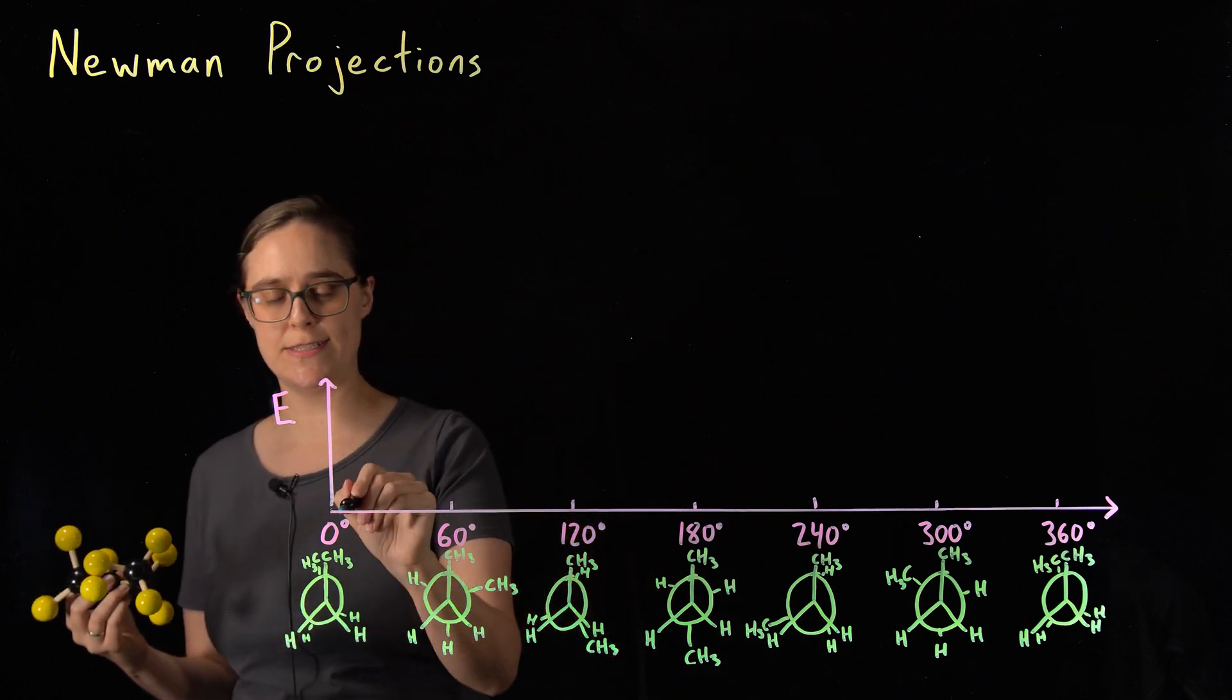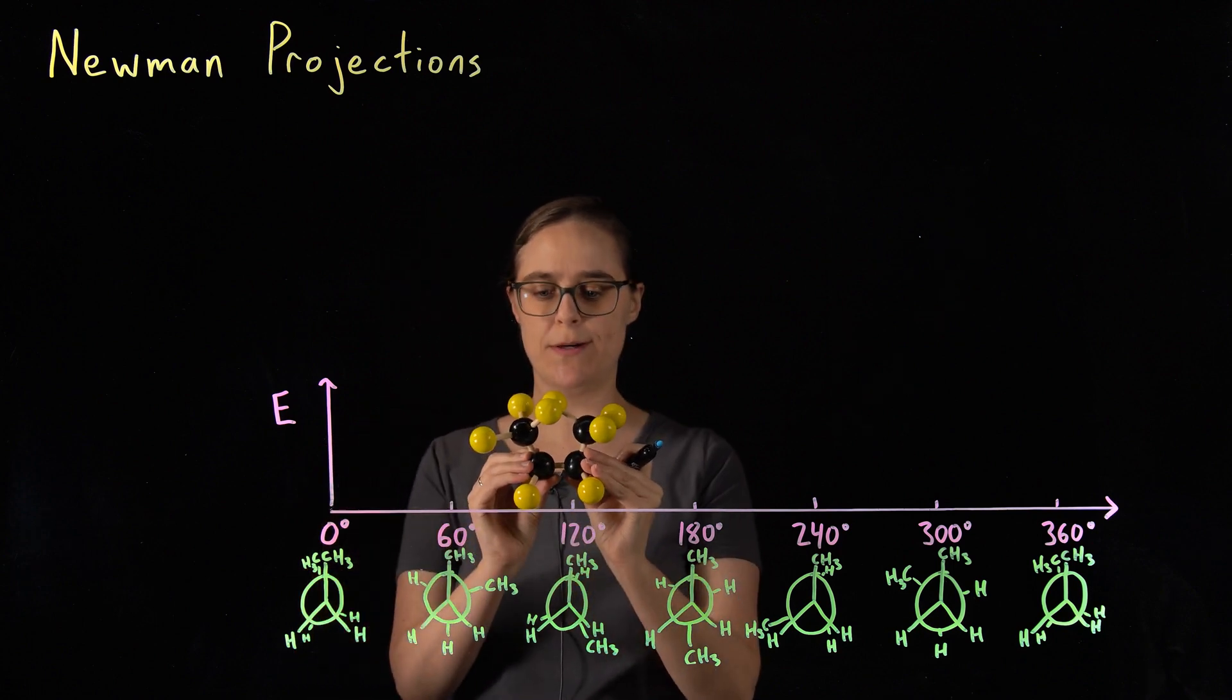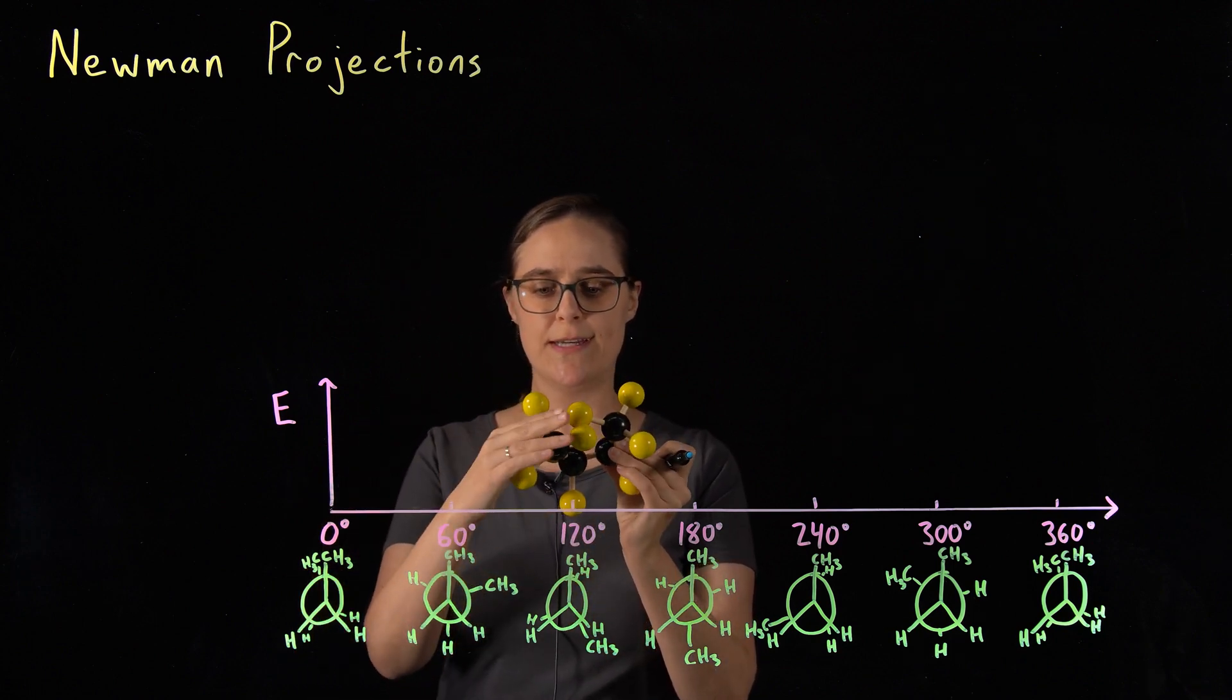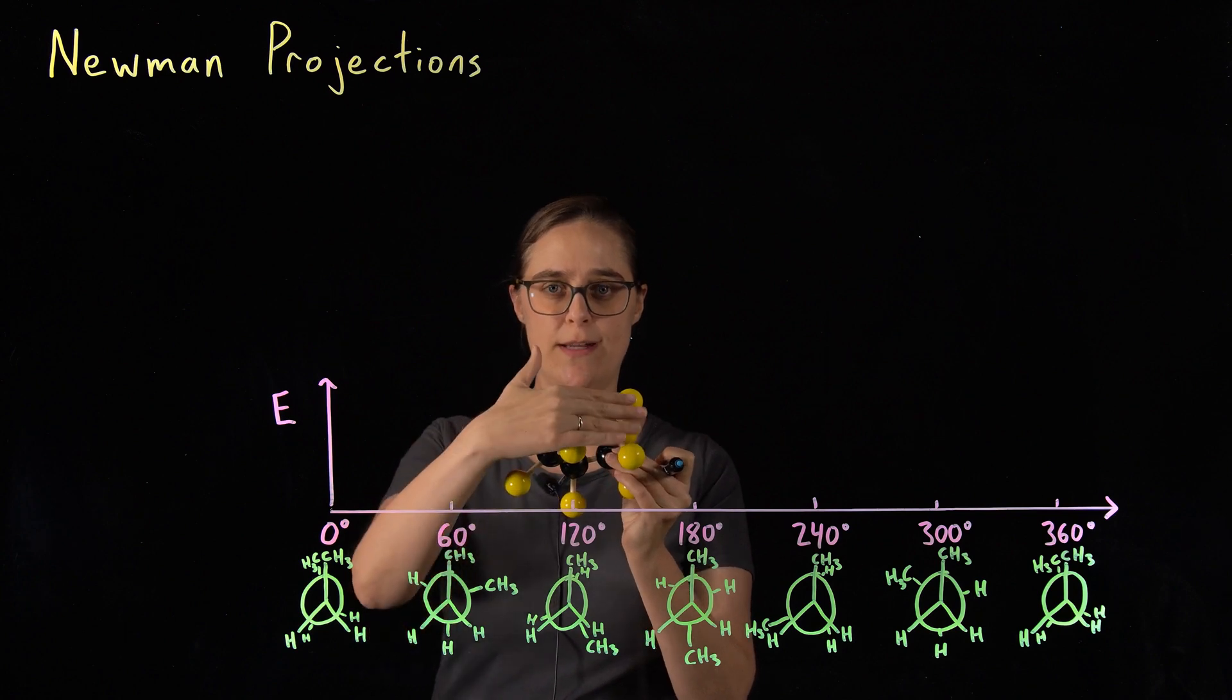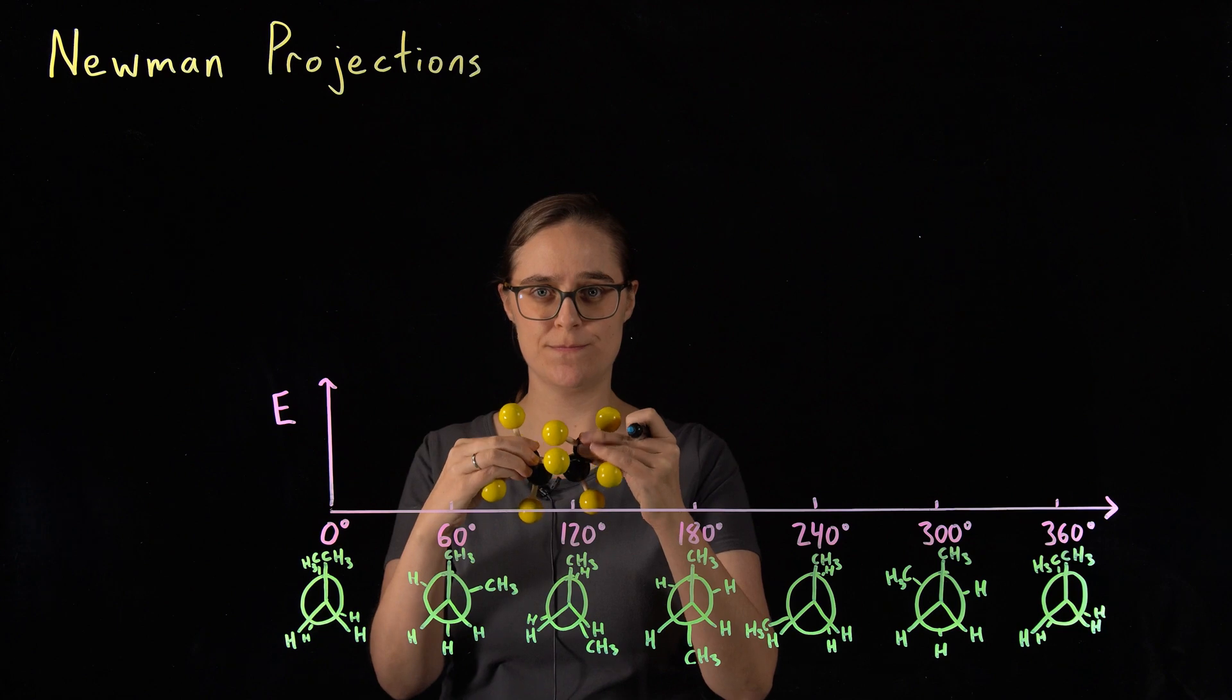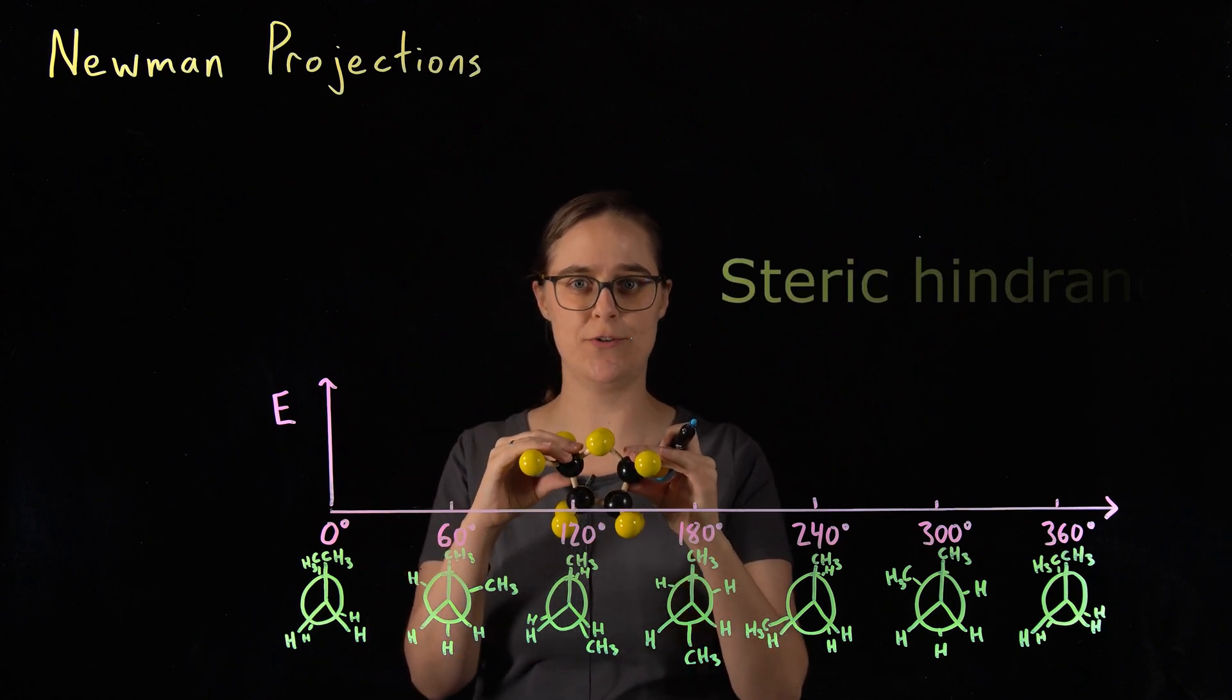Let's first consider this dihedral angle of zero degrees. In my molecular model, at this zero degree dihedral angle, you can see that hydrogens on carbon one and hydrogens on carbon four can actually hit each other. They are too close together. This is called steric hindrance.